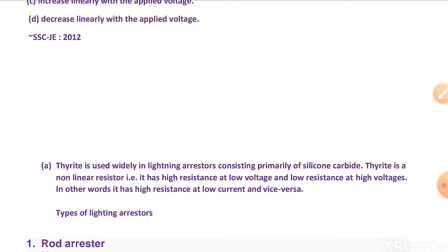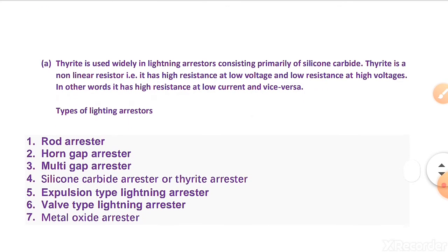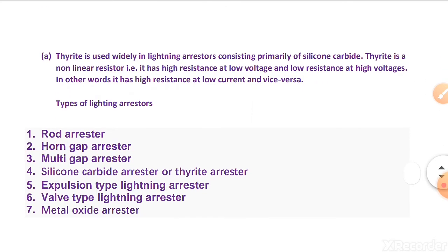Types of lightning arresters: there are a total of 7 types — rod arrester, horn gap arrester, multi-gap arrester, silicon carbide arrester or thyrite arrester, expulsion type arrester, valve type lightning arrester, and metal oxide arrester.